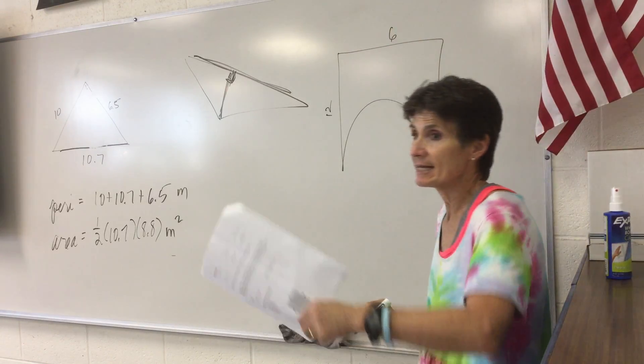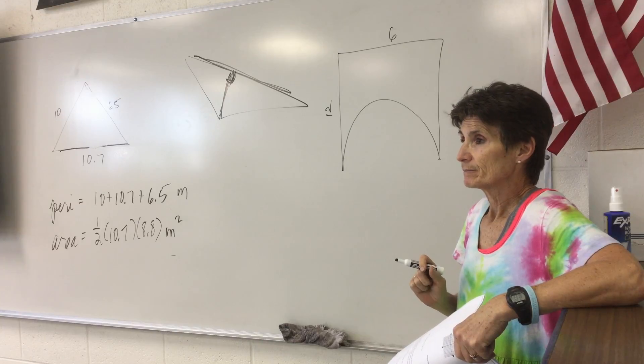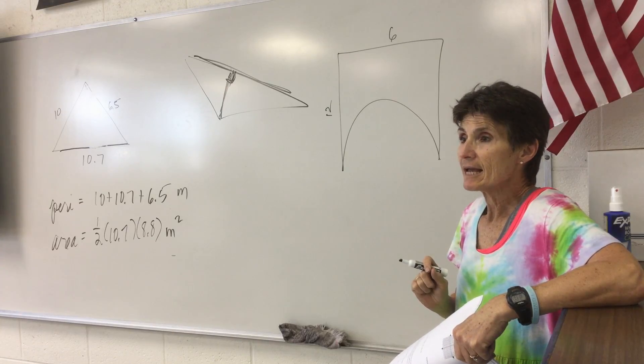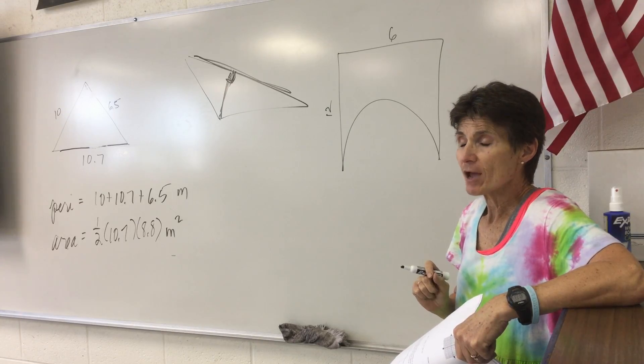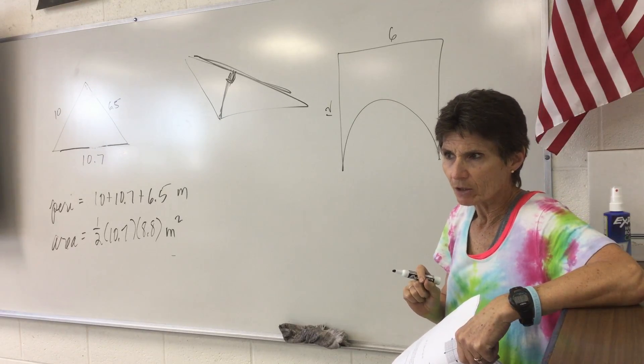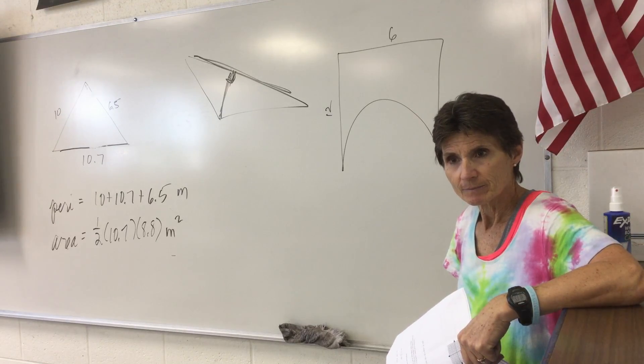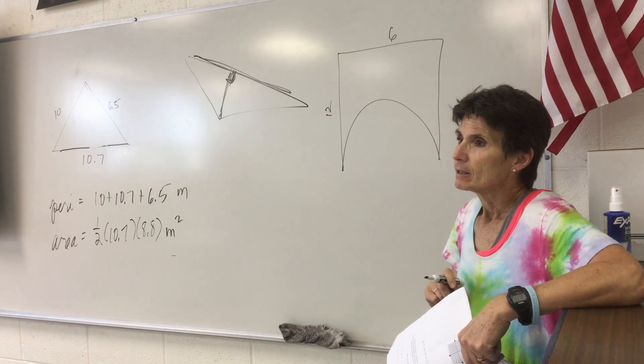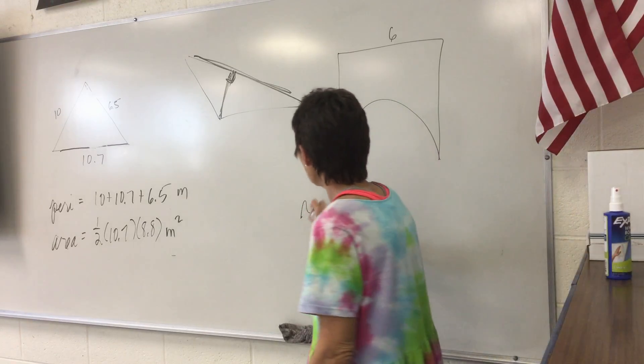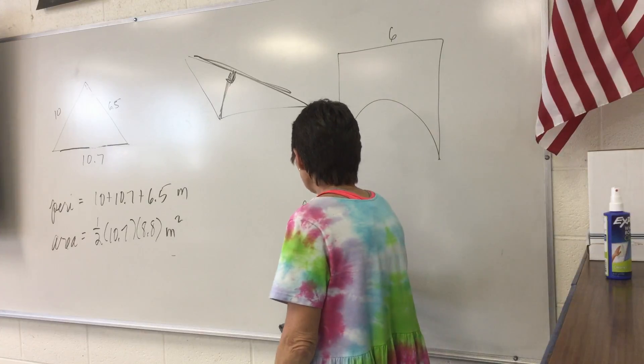Josh, to find area, first thing you have to do, Antonio, is decide what shapes we have here. What two shapes do we have here? Rectangle. Thank you, Antonio. You got a rectangle. I have a rectangle and a what, Antonio? A circle. A semicircle. A semicircle, yep.